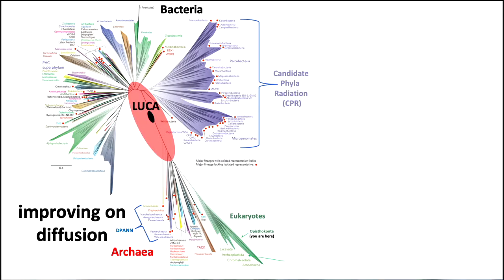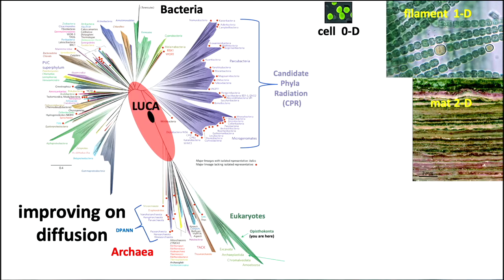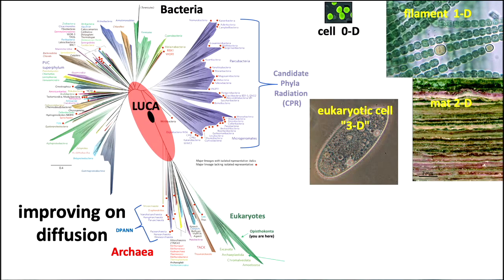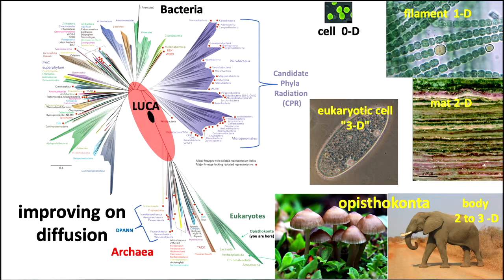Where do these organisms fall in the tree of life? The zero-, one-, and two-dimensional structures are all bacteria, while the three-dimensional structures are eukaryotes. In the lower right of the phylogenetic tree, you can see eukaryotes — and the opisthokonts, which include fungi and animals, are also there. Large-bodied organisms are restricted to that part of the tree.